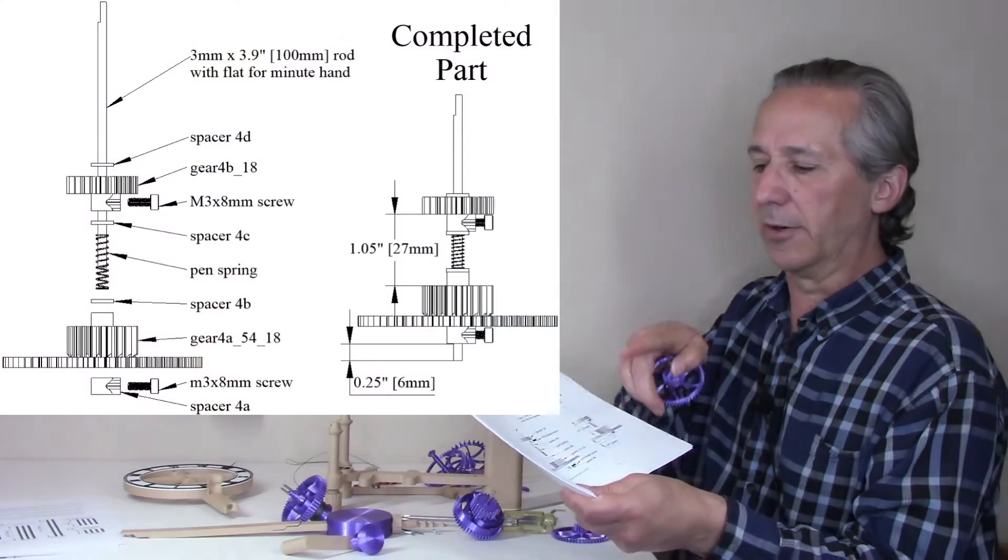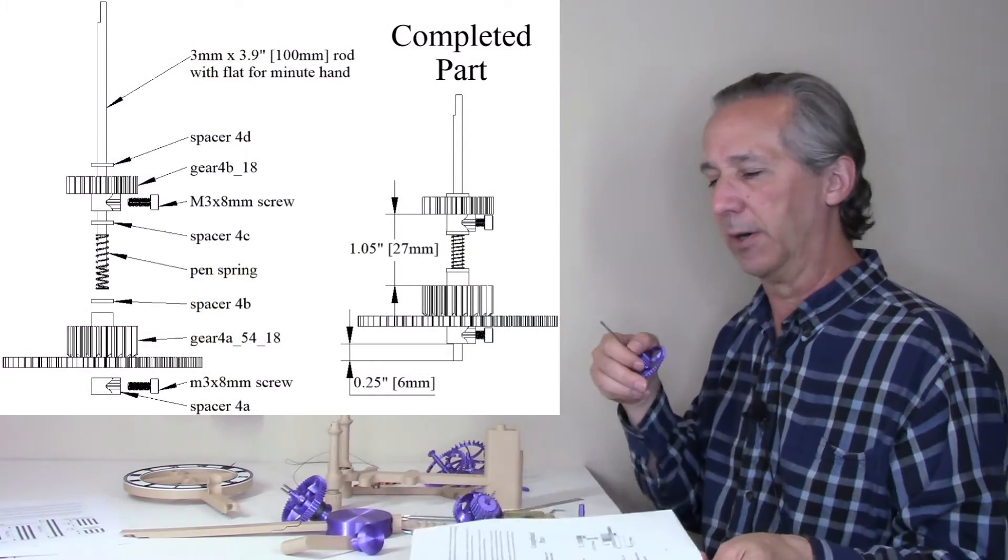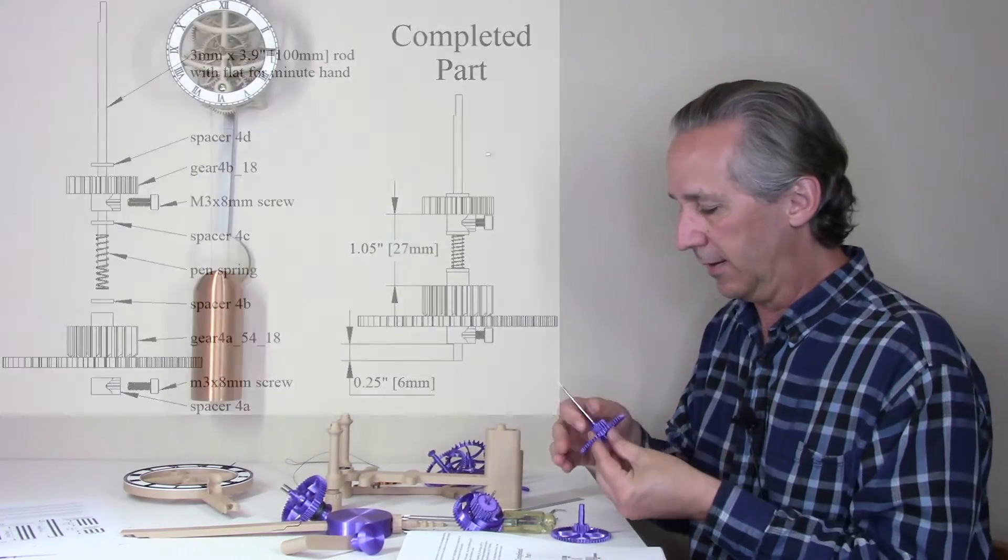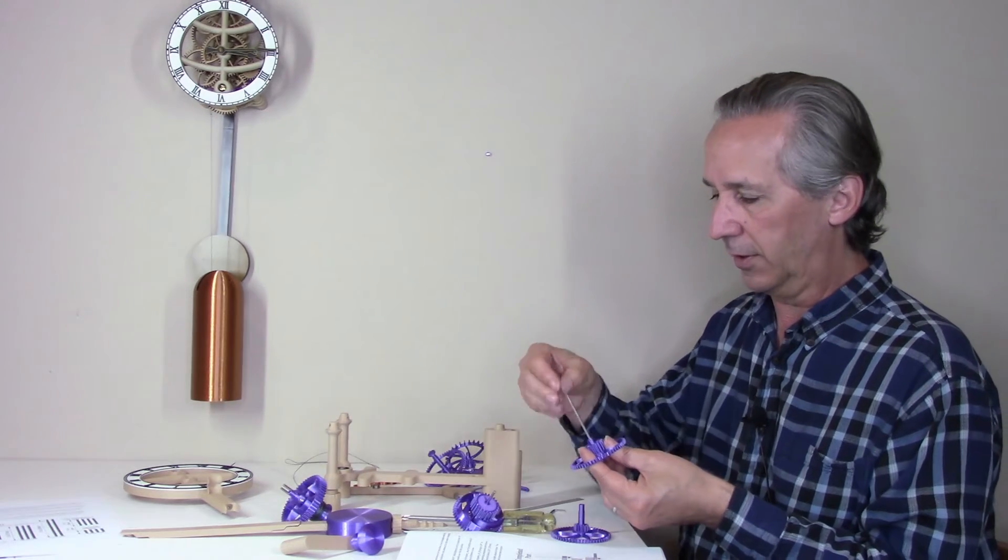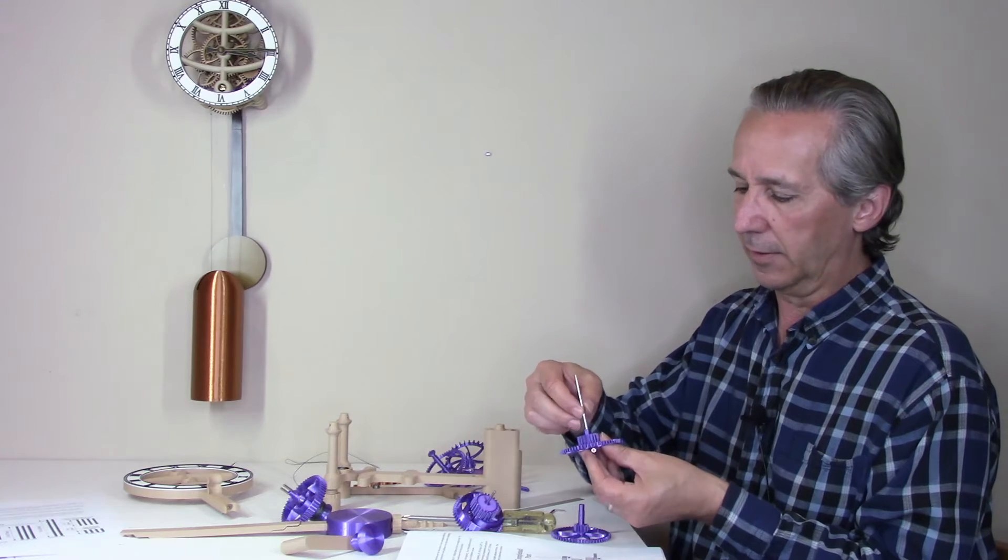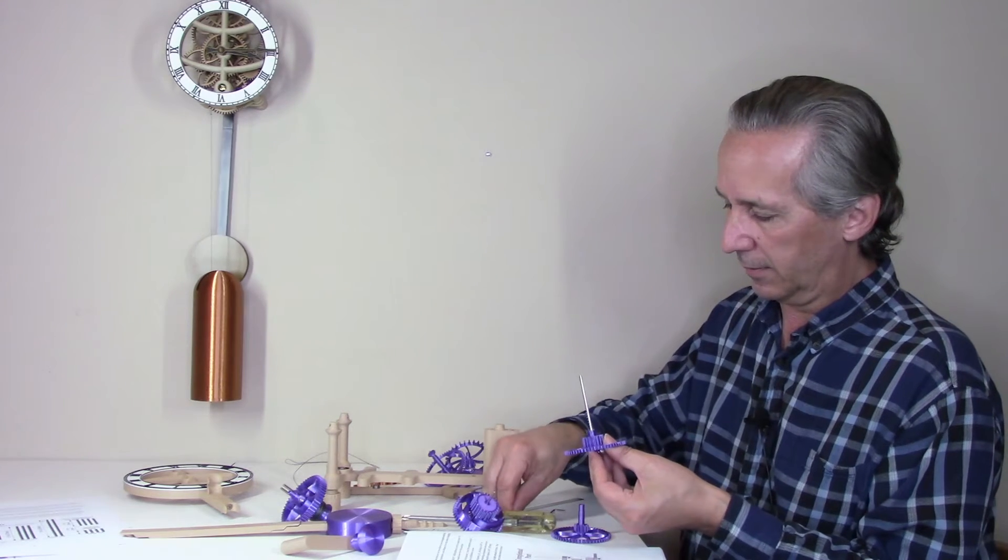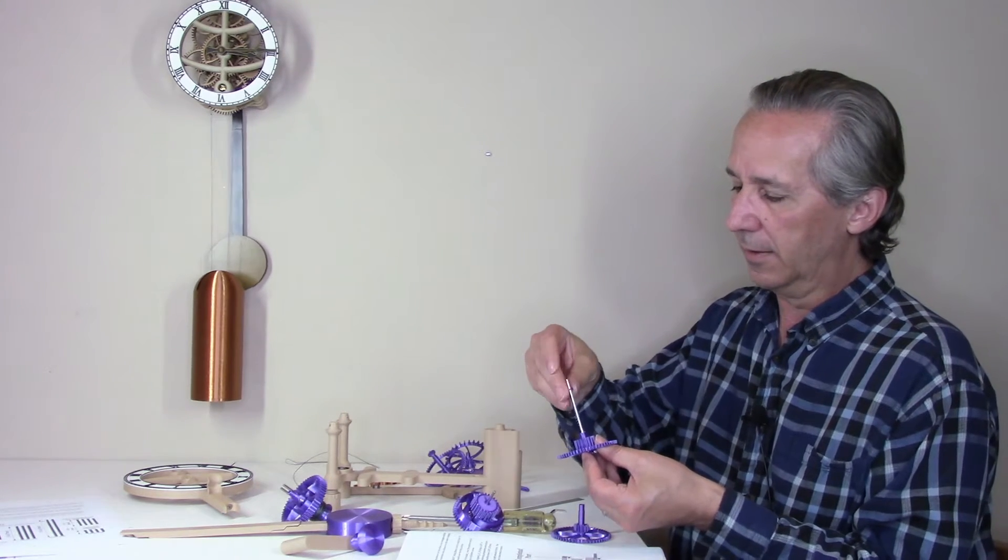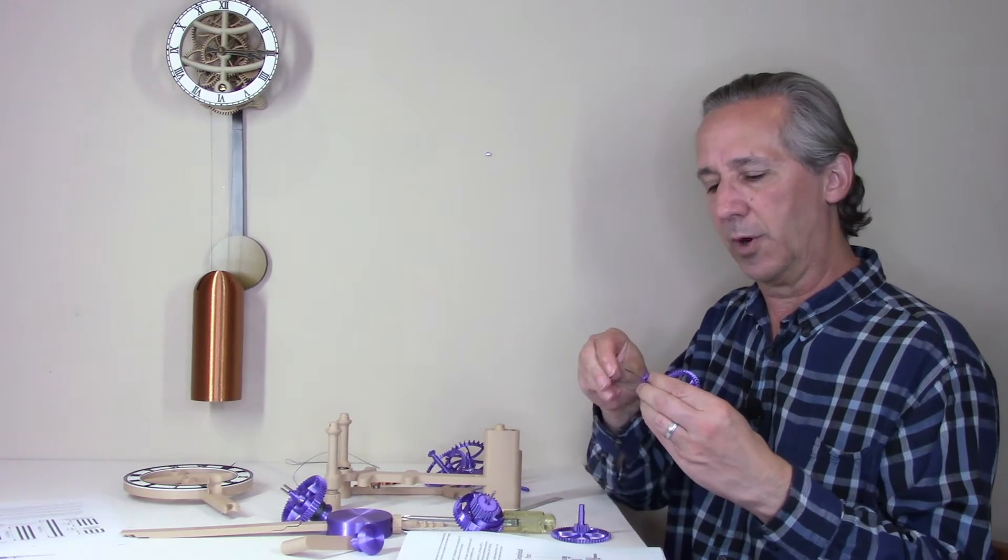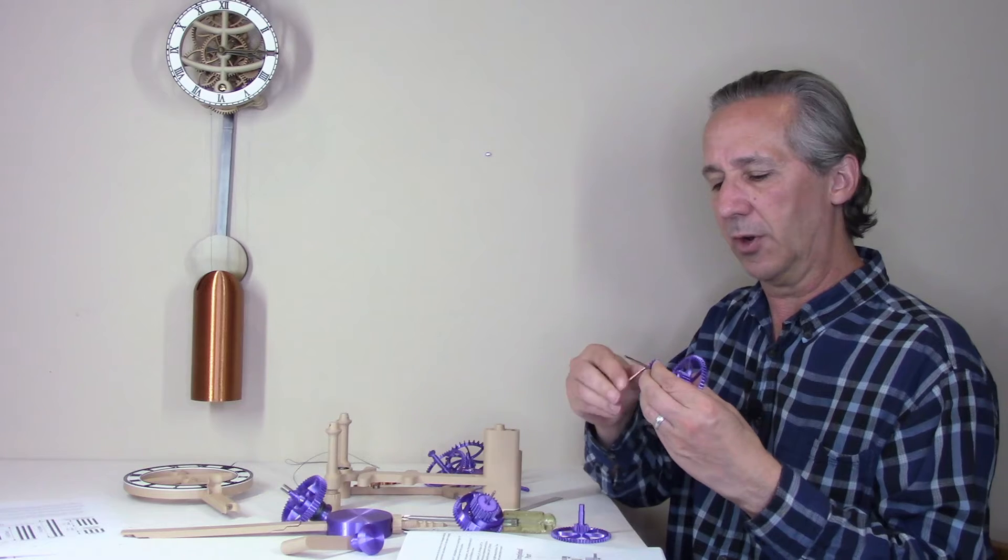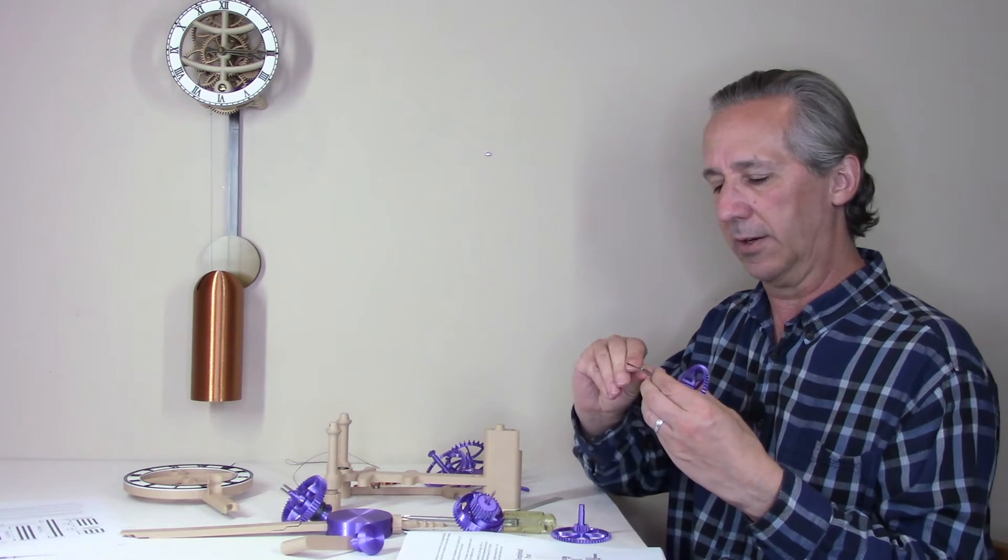Follow the diagram of how to add the parts in the assembly guide. It continues by adding a spacer, the spring from a click pen, another spacer, and then gear 4B with just over an inch of clearance between the gears.